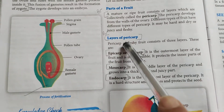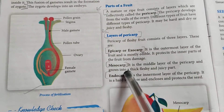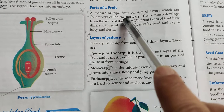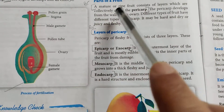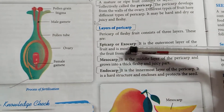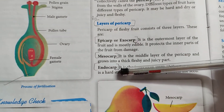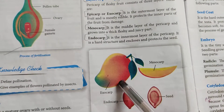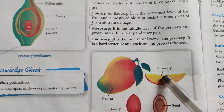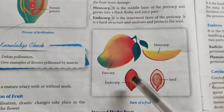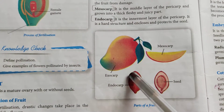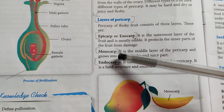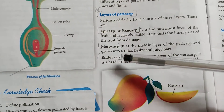Parts of a fruit: once the ovary becomes mature, it forms a ripe fruit. It consists of certain layers collectively called the pericarp. Pericarp has three layers. Epicarp or exocarp is the outermost layer of the fruit and is mostly edible. Mesocarp is the middle layer — thick, fleshy, and juicy. Endocarp is the hard part inside the fruit which contains the seed.